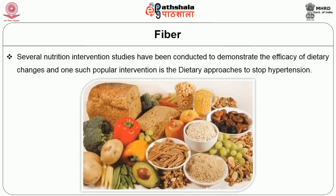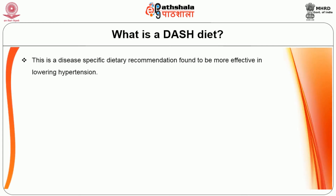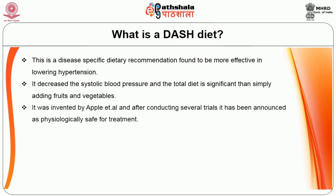Several nutrition intervention studies have been conducted to demonstrate the efficacy of dietary changes, and one such popular intervention is the Dietary Approaches to Stop Hypertension — the DASH diet. This is a disease-specific dietary recommendation found to be more effective in lowering hypertension. It decreases systolic blood pressure, and the total dietary pattern is more significant than simply adding fruits and vegetables. It is used both for preventing and treating hypertension.